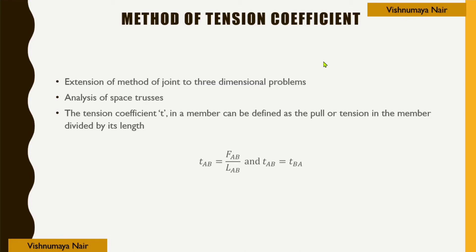In this method we consider a tension coefficient t in a member such that t is equal to the force in that member — that is the tensile force — divided by the length of the member. So tab, the tension coefficient in member AB, can be defined as fab divided by the length of member AB.